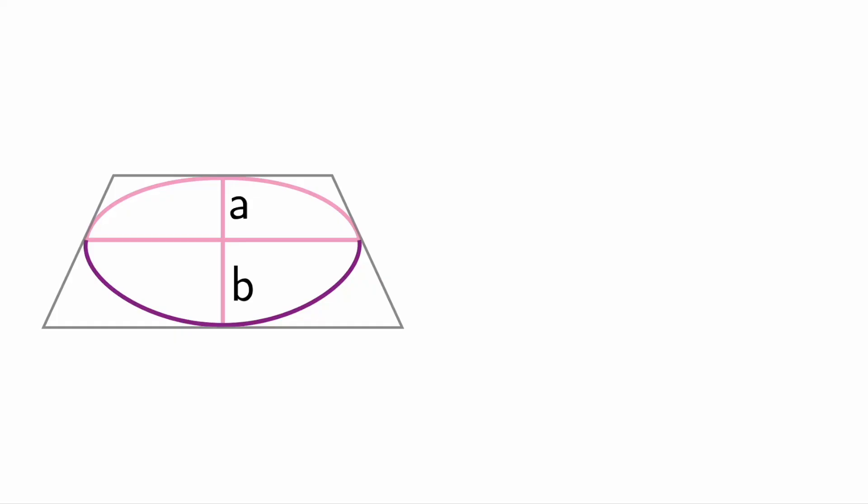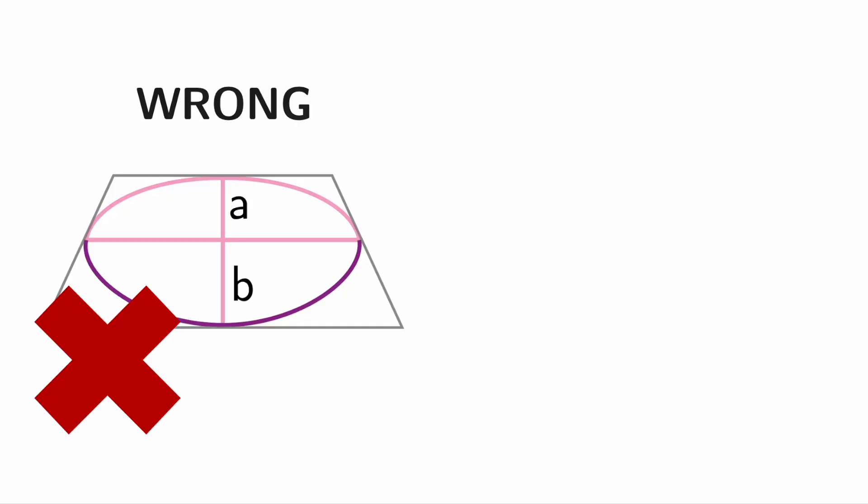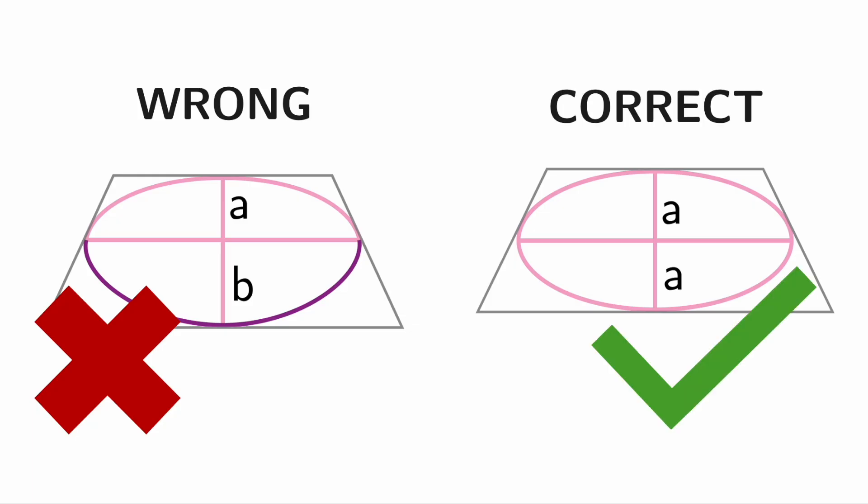But it turns out that's not correct. Circles become perfect regular ellipses under perspective. I'll prove this later.